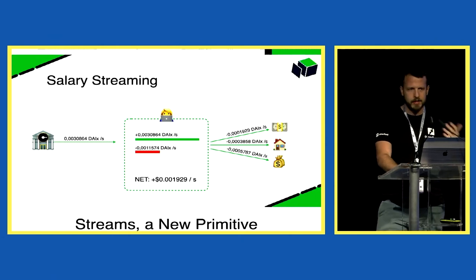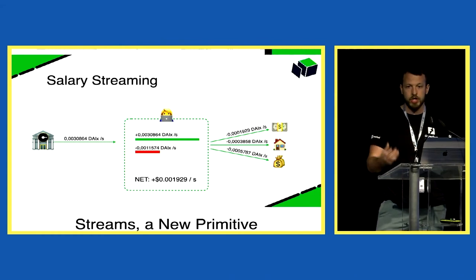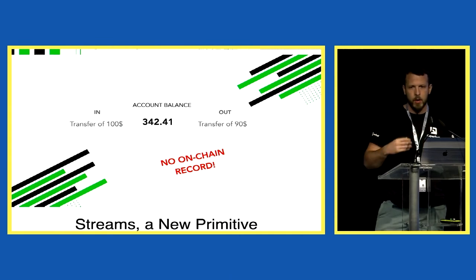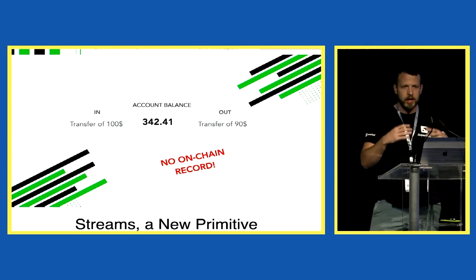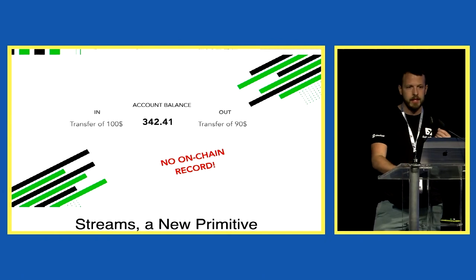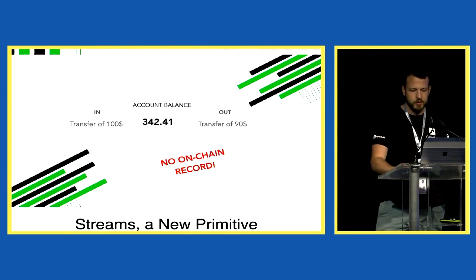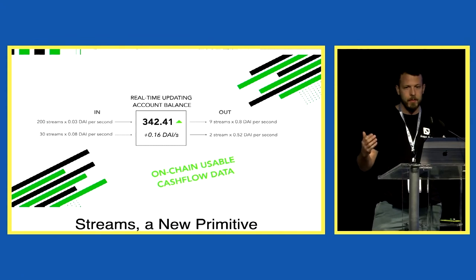Why is it important that streams happen on-chain? We've talked about state channels for ages, but it's extremely hard to build on state channels, while it's extremely easy to build DeFi on-chain. With a normal balance, a smart contract checks if you have enough. There's no way on-chain to check what happened before — no on-chain record of transactions. But with streams this changes: you have an on-chain record of all funds you're receiving and sending in real time. Your smart contract can query this — you have on-chain cash flow data to build applications that move money in the future.